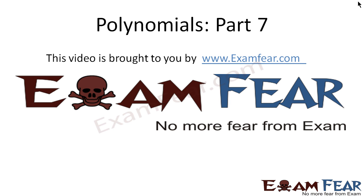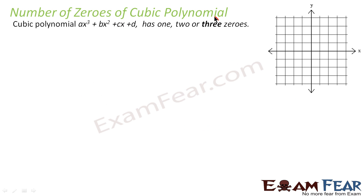Hello friends, this video Polynomials Part 7 is brought to you by examfear.com — no more fear from exams. Before watching this video, please make sure that you have watched Polynomials Part 1 to Part 6, where we covered scenarios with one zero and two zeros. Now we'll take the scenario where we have three zeros. Let's take the polynomial function p(x) = x³ - 4x.